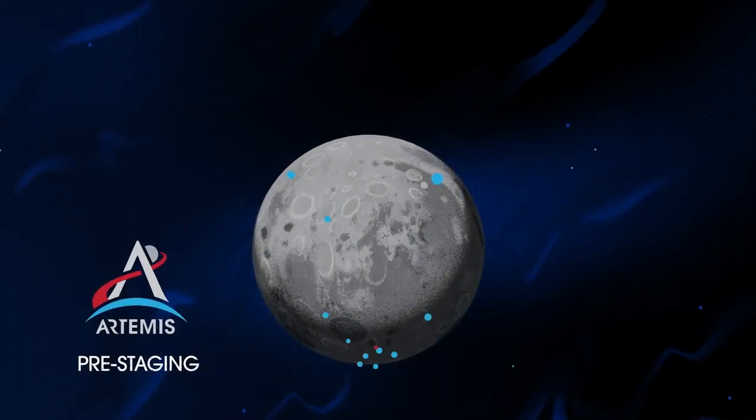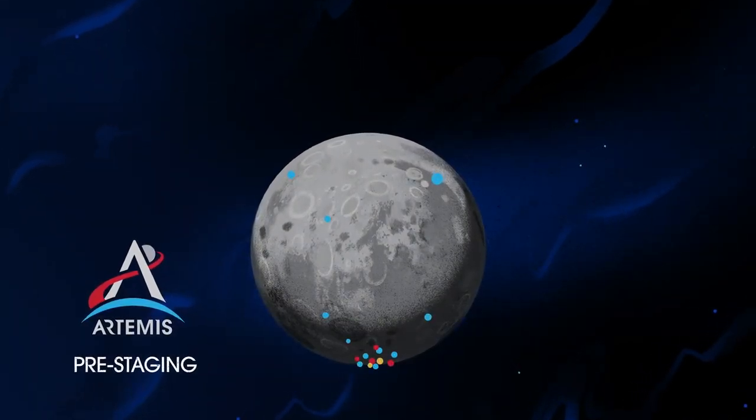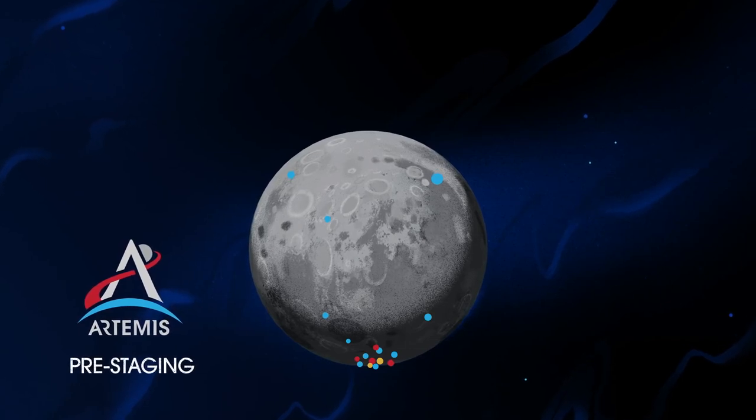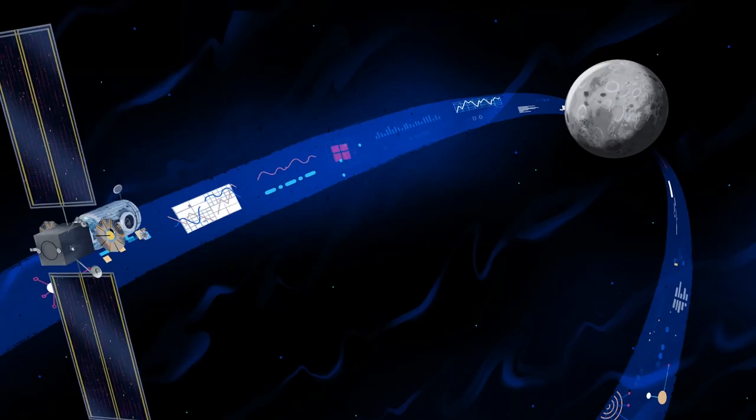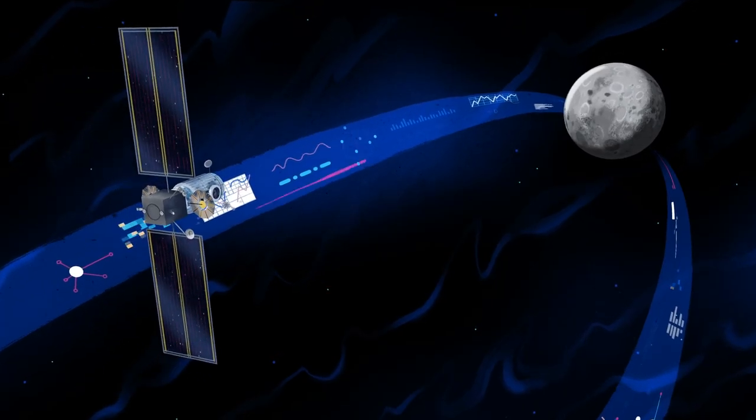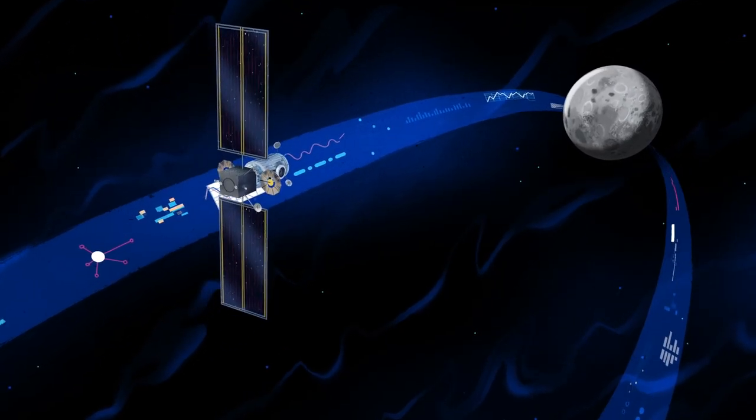Everything needed for lunar missions will be positioned in advance by commercial and international partners. This includes rovers, science experiments, and human-rated systems on the surface. But it also includes a dedicated lunar station in orbit around the Moon called Gateway.